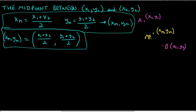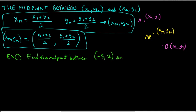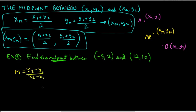Let's do an example: find the midpoint between negative 5, 2 and 12, 10 — the same points from our first distance example. We want the midpoint, not the distance. Be careful: if you use M for midpoint, you might confuse it with slope. We don't want slope here — that's a completely separate question. Use the midpoint formula.